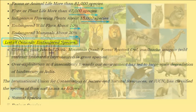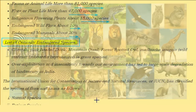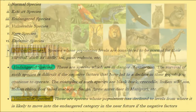Critically endangered species include the cheetah, pink-headed duck, mountain quail, forest spotted owl, Madhuca insignis (wild mahua), and Hubardia heptaneuron, a grass species. Over-exploitation and insensitivity towards the environment has led to large-scale degradation of biodiversity in India. The IUCN (International Union for Conservation of Nature and Natural Resources) has classified species of flora and fauna as follows.